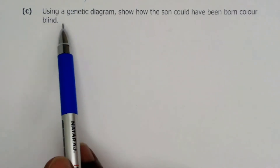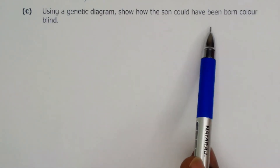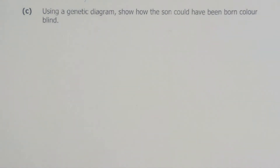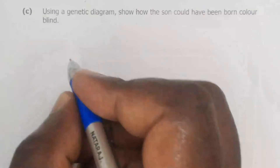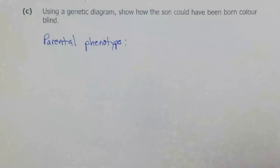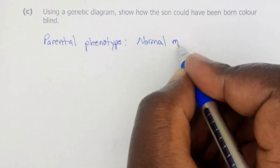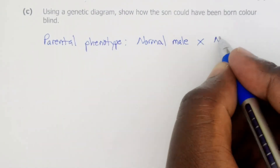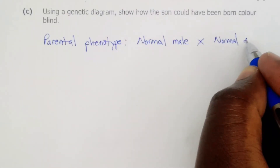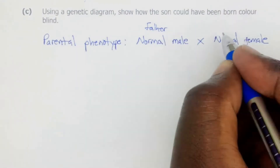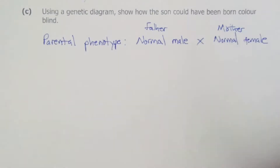The next question asks us to use a genetic diagram to show how the son would have been born colorblind. Whenever we write a genetic diagram there are five steps. The first step is to write the parental phenotype: normal male crossed with a normal female.